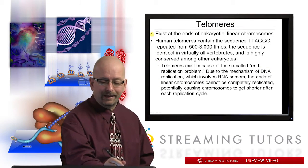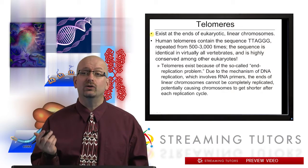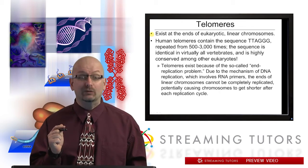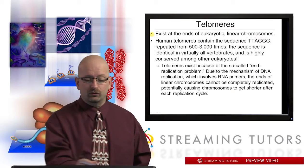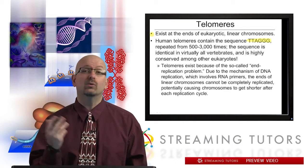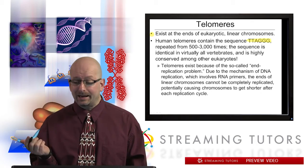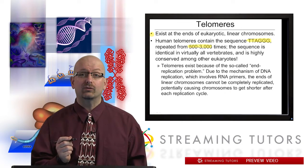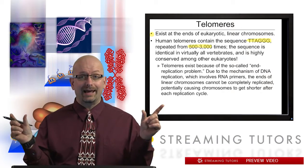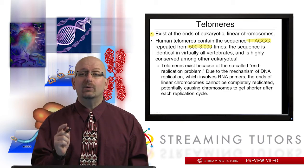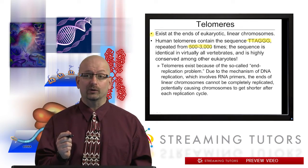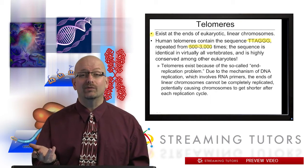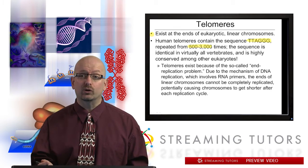Telomeres exist at the ends of eukaryotic linear chromosomes, and this linear aspect is really important to understanding their function. Human telomeres contain the sequence TTAGGG, repeated anywhere from 500 to 3,000 times at each end of the chromosome. The sequence is identical — not just similar — in all vertebrates, and among other eukaryotes it's highly conserved, so the mechanism of action is likely similar in pretty much all eukaryotes.